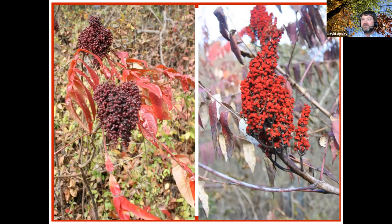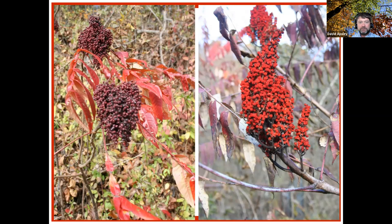Smooth sumac has a slightly lemony taste when chewed (verify species before tasting anything). Ash fruits are winged seeds; Ohio has white, green, and black ash, though none are common anymore due to emerald ash borer. Blue ash is doing relatively well, has square twigs, and is found more in southwest Ohio on limestone soils.